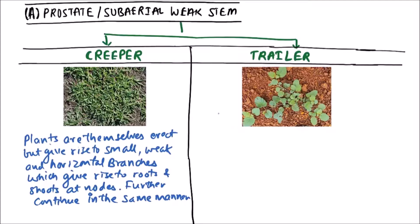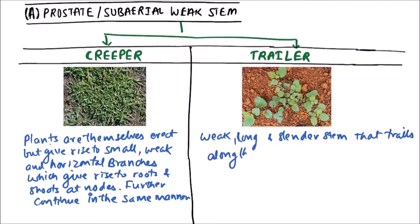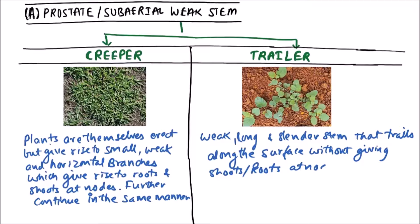But in case of trailer, there is a weak, long and slender stem that trails along the surface without giving shoots or roots at nodes.